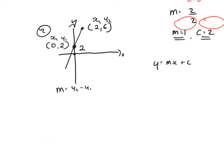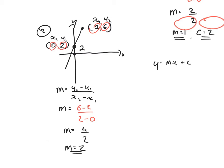m equals y2 minus y1 over x2 minus x1. Straight substitution: 6 minus 2 over 2 take away 0. 6 take away 2 is 4, 2 take away 0 is 2. 4 divided by 2 — the gradient of the line is equal to 2. What's the y-intercept? We just check where we cut the y-axis, and I can see that I cut it at 2. C is equal to 2. So m is equal to 2, c is equal to 2. Where I see m I replace it with 2, and where I see c I replace it with 2. Final answer: y equals 2x plus 2.